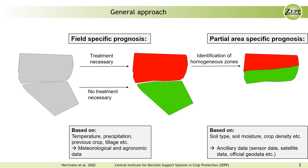Therefore, ancillary data sources like satellite data or official geodata need to be used. From those sources, the spatial distribution of factors like soil moisture or crop density can be approximated. By using these sources, it is possible to differentiate zones of relatively high or low disease intensity. These zones give an indication of the relative disease distribution in a field. To estimate the actual or absolute disease intensity, either a sample has to be drawn or it has to be predicted by a traditional prognosis model.